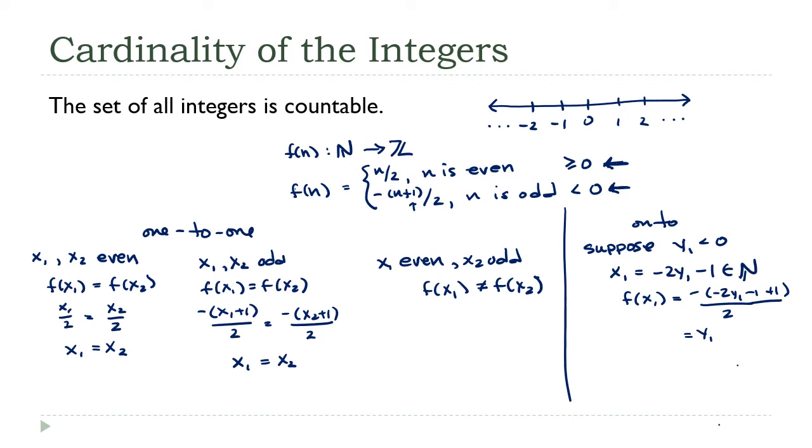Now how about the other way around? Suppose y2 is greater than or equal to 0. Then I'm going to pick x2 equals twice y2. And then f of x2 is equal to 2y2 divided by 2. Clearly this is an even number, so that's the formula that I use there. And this is equal to y2. So there you go. Every integer has a natural number that gets mapped to it by my function. So my function is both 1 to 1 and onto. And that's what we needed to show.